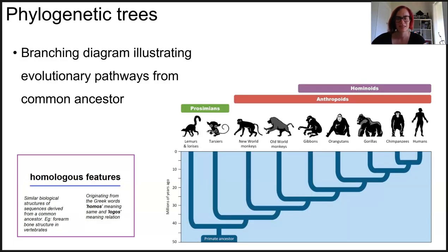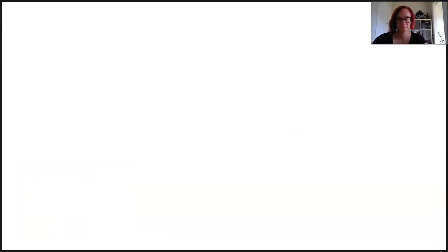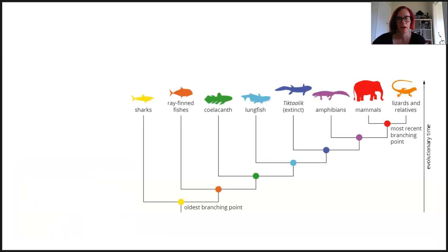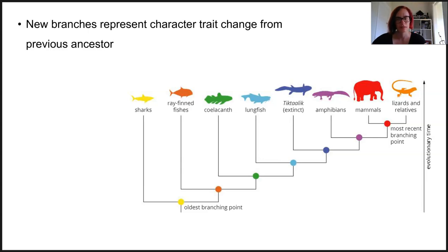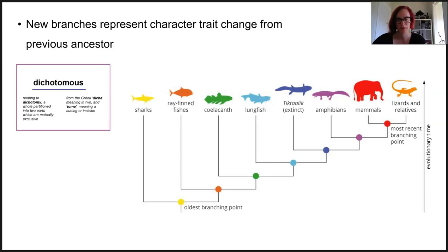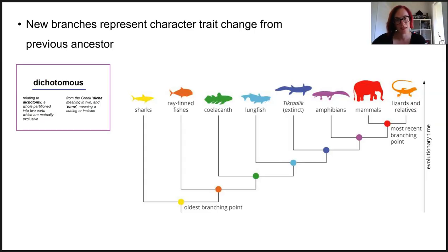Phylogenetic trees can be built using DNA or physical features. Each new branch represents a change in a character trait from a previous ancestor, and this branching is dichotomous — it either changes from the ancestor or exists with the same trait. As traits change, we can assume that new species are being formed, and as more changes accumulate, the evolution of species is occurring.